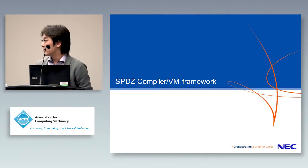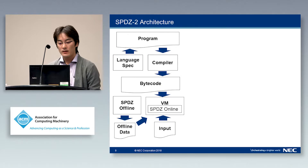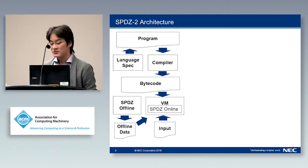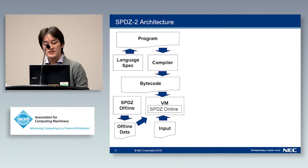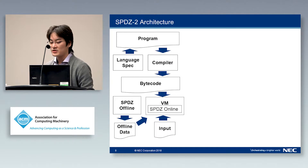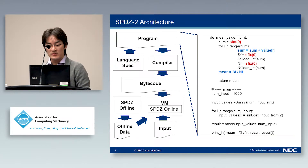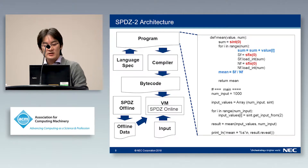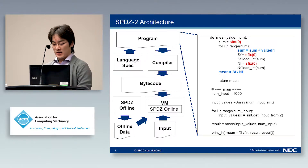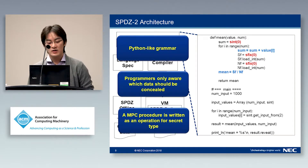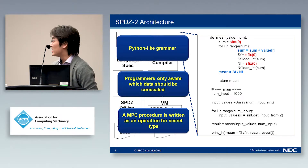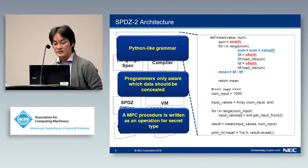Before moving on to our work, we introduce the original SPICE compiler and VM framework. This diagram illustrates the original SPICE software. The software receives a description of the computation in a high-level language. We show an example of a high-level program for SPICE. Basically, the high-level program is described using Python-like grammar, with function definitions, for-loops, and other constructs almost the same as Python, plus several dedicated grammar constructs for MPC.